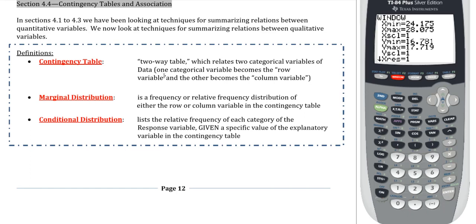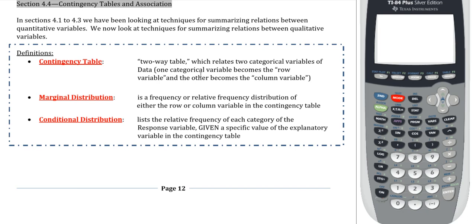Hello and welcome to a digital statistics lecture for Salt Lake Community College. In this video we're going through section 4.4, contingency tables and association. At this point we're more or less done with how to connect two quantitative variables together, which is what we were doing with bivariate data. Now we're going to talk about how to connect two qualitative variables together, and this will also lead into chapter 5, specifically sections 5.3 and 5.4 dealing with probability.